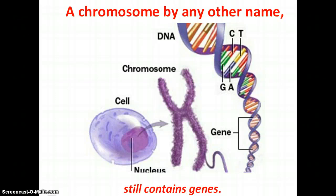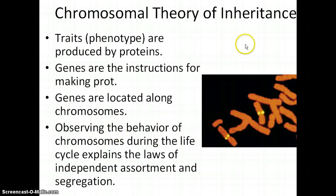In this lecture, we're going to look at the relationship between the behavior or movement of chromosomes and the passage of traits from parent to offspring. We know that the traits we see in an organism — the color of their skin, the color of their eyes, the color of their hair, the height of individuals — are all due to the production of proteins that build and then operate the body.